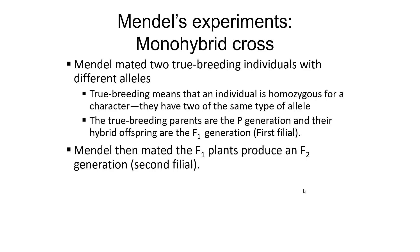Gregor Mendel, a monk who worked a lot with peas, mated F1 plants to produce an F2 generation. He had many true breeding types: plants with purple flowers, white flowers, tall ones, short ones, wrinkled peas, yellow peas — just about everything. Pea plants can mate with themselves and produce viable fertile offspring. He mated these to make the F1 generation, then had those F1s self-mate to produce the F2, the second filial generation.